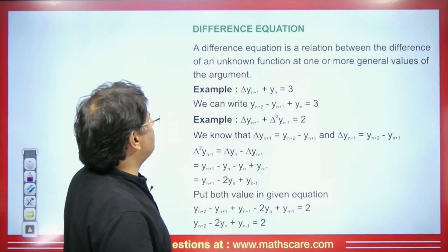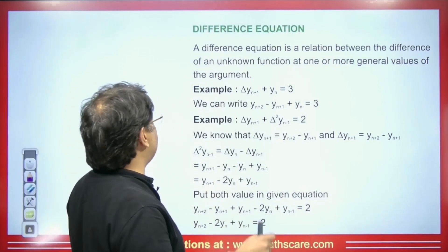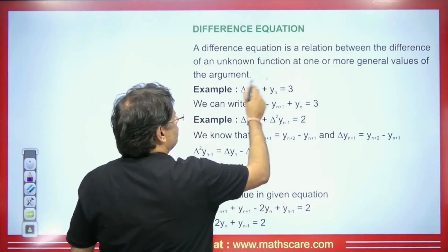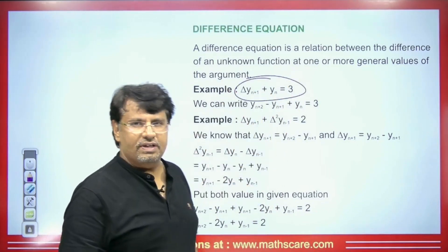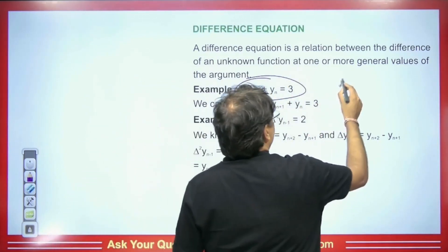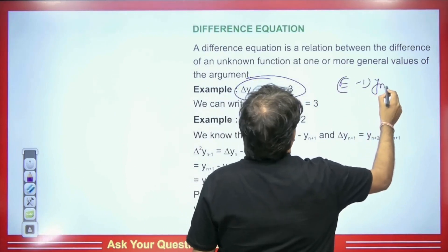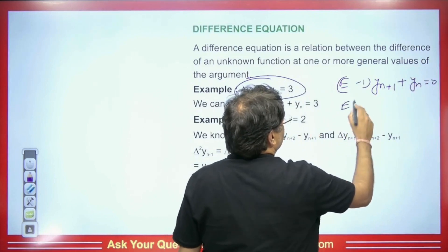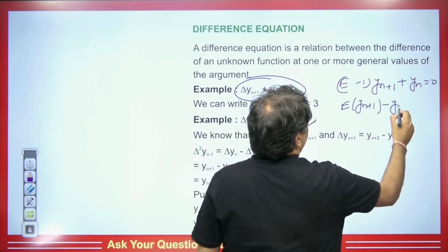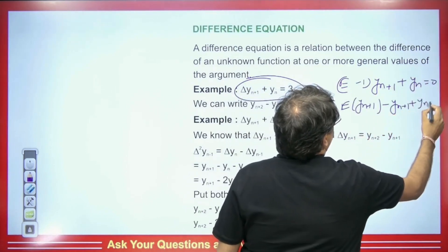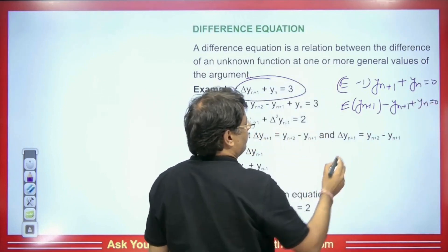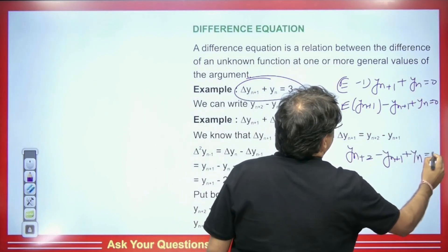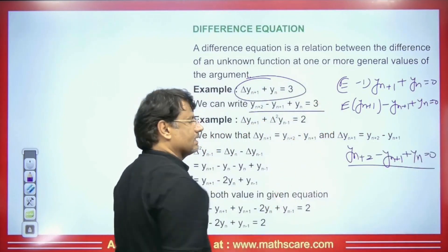What is a difference equation? A difference equation is a relation between the differences of an unknown function at one or more general values of the argument. In other words, the delta can be written as (E - 1), so yn+1 + yn = 0. We will put yn inside and this will be E·yn+1 - yn+1 + yn = 0.